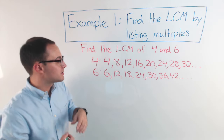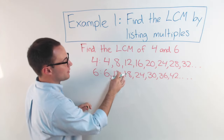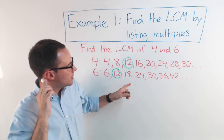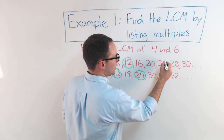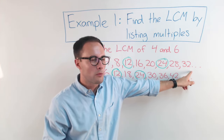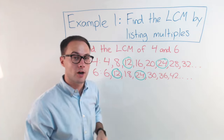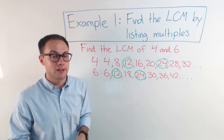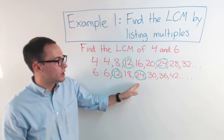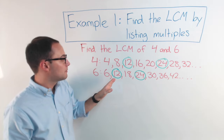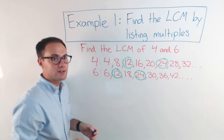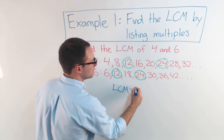Let's find them and circle them. Four and eight — no. But there's a twelve in both, so that's in common — I'm going to circle that. Sixteen, no. Eighteen, no. Twenty, no. Twenty-four is also in common. If I kept going, thirty-six would also be in common. So what is the least of the common multiples? Common multiples include twelve, twenty-four, and thirty-six, but the least is twelve. So the LCM of four and six is twelve.